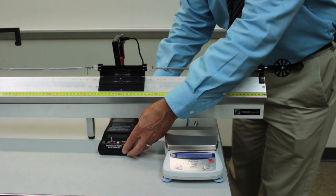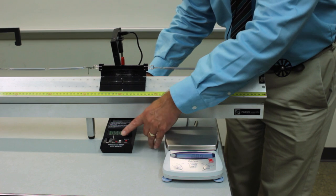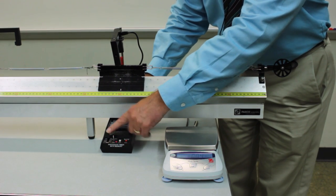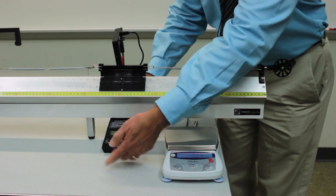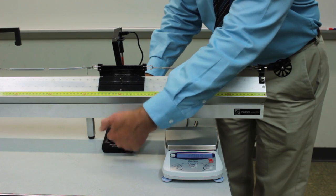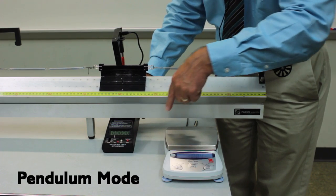Now the photogate timer has a number of functions. You want to set it to the pendulum mode. So when you come into the lab, the device will probably be switched off. Just push the function switch all the way to the top to the pendulum mode.